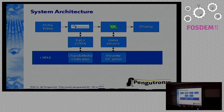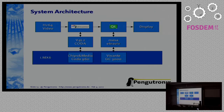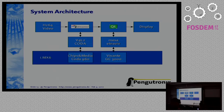Going back to the full system architecture: we have the SoC at the bottom. Video files go into GStreamer; GStreamer uses the Video4Linux CODA driver in the Linux kernel for hardware decoding. Then we use the zero-copy sync to hand off to Qt, which uses Mesa and EtnaViv for compositing the user interface and the video frames, and then forwards everything to the display. Everything in this pipeline is open source.